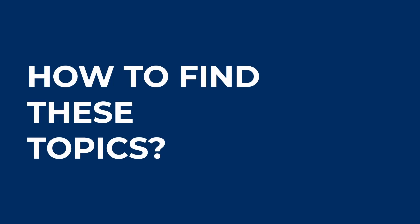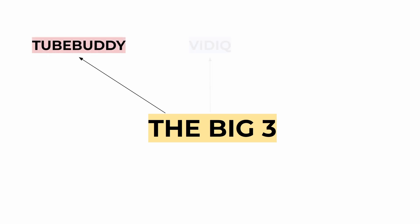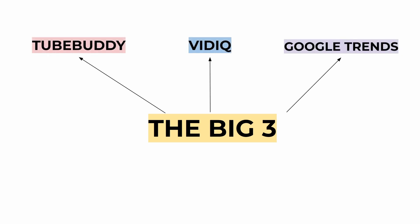The question now is how do you find these topics — both evergreen and trending? For this you use the big three, which are TubeBuddy, VidIQ, and Google Trends. In this video I'm going to teach you exactly how to use these three tools to find never-ending topics for your YouTube channel so you can grow and succeed. All the links for these extensions will be in the description below.